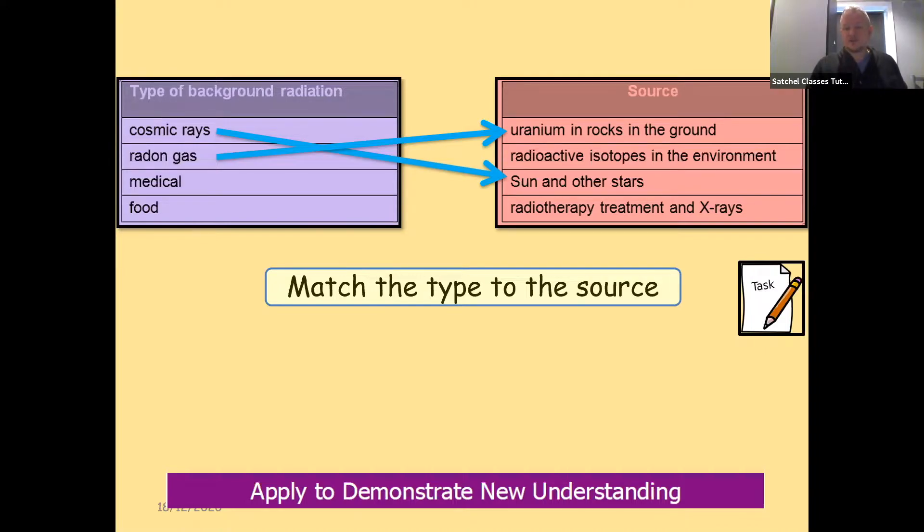Medical sources come from radiotherapy treatment and x-rays. And then food, plants, animals—they come because of the absorption of radioactive isotopes within the environment.